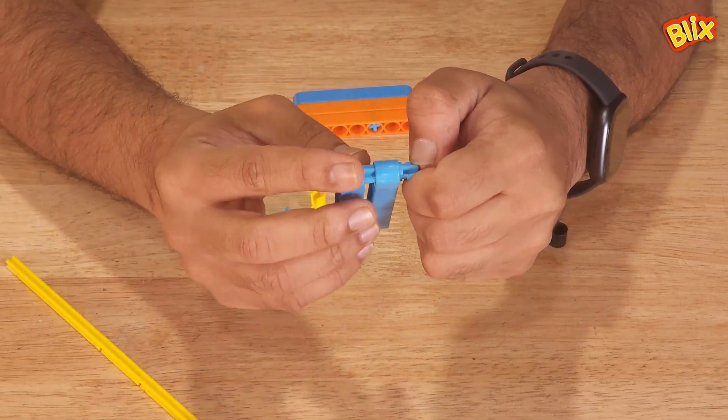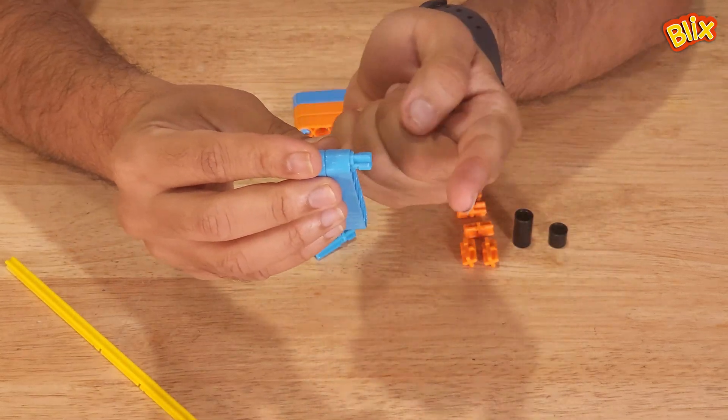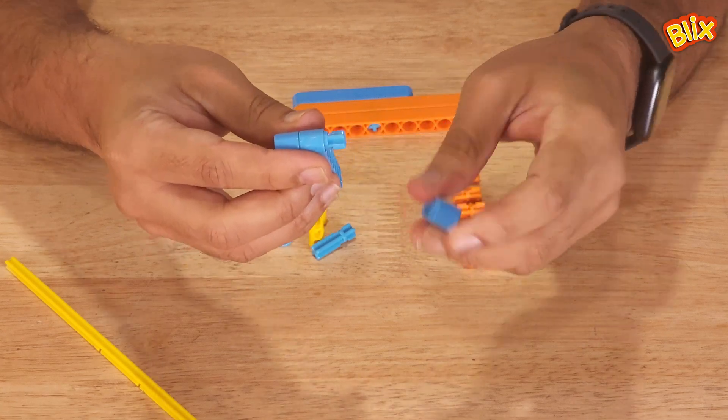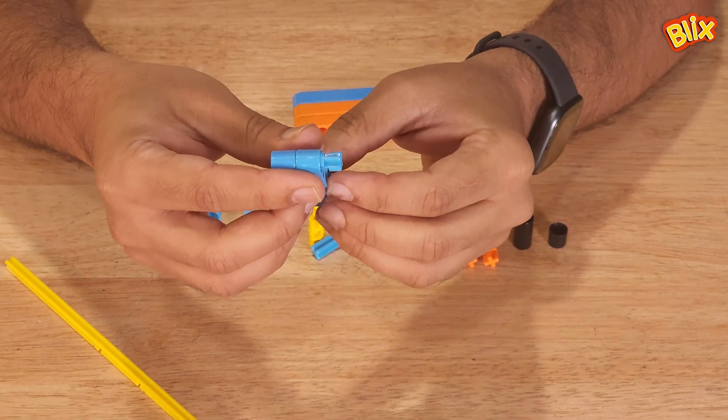So on this side, you can connect two pieces, and on the other end, you can connect a single piece. So whenever you're building a model, keep in mind where you want to attach the collar.